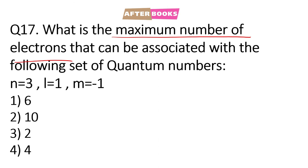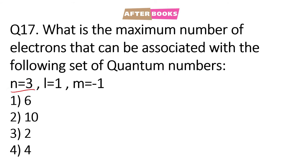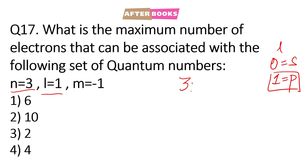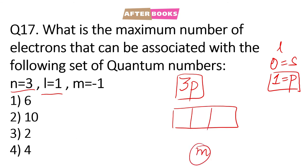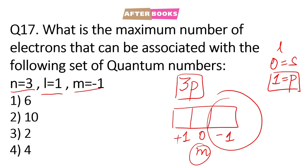Question number 17: What is the maximum number of electrons that can be associated with the quantum number set n = 3, l = 1, m = −1? n = 3 is the principal quantum number; l = 1 means a p orbital (i.e., 3p). For l = 1, m ranges from +1, 0, −1. With m = −1, this is one specific orbital, which can accommodate a maximum of 2 electrons with opposite spins.